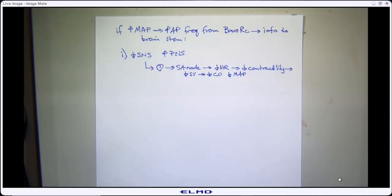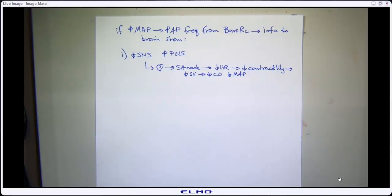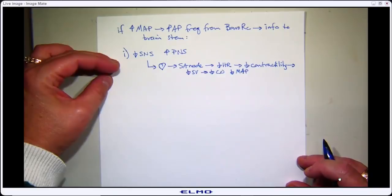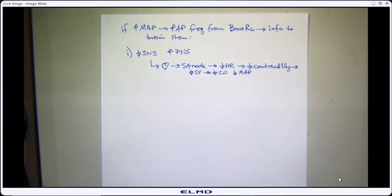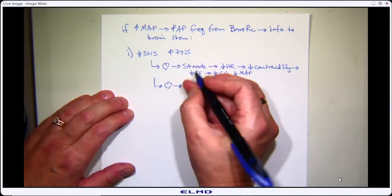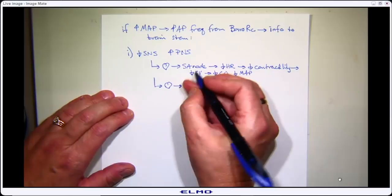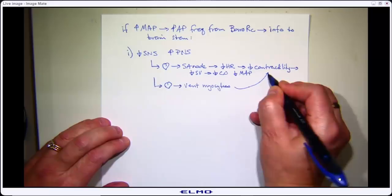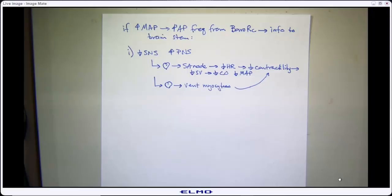Sensors sensed a change — sensed an increase — sent that information to the brain stem, changed SNS and PNS coming out to different effectors including the heart, to drop mean arterial pressure. We also have SNS and PNS innervation into the ventricular myocytes, so we'll decrease contractility, decrease stroke volume, decrease cardiac output, and decrease mean arterial pressure.